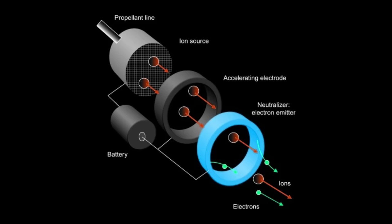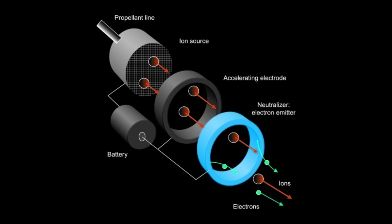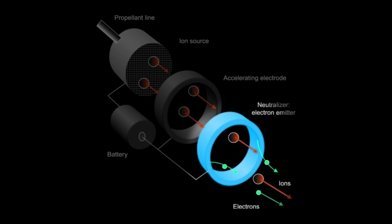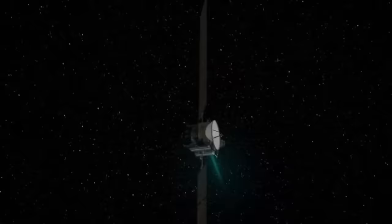Electrostatic thrusters work on the principle of ionizing propellant atoms by knocking an electron off them, and then you accelerate the ions through an electrostatic field to very high speeds. And importantly, after those ions are ejected, they also need to be neutralized, so you have an electron gun that's spraying electrons after them to neutralize the whole thing.